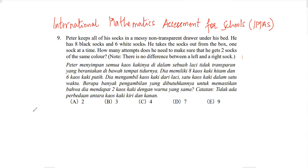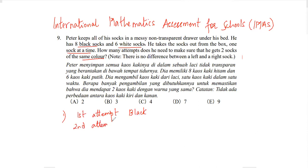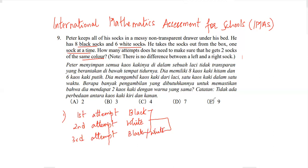Question 9: Peter keeps socks in a non-transparent drawer — 8 black socks and 6 white socks. He takes socks out one at a time. How many attempts does he need to guarantee two socks of the same color? In the worst case: first attempt gets black, second gets white — two different colors. On the third attempt he must get either black or white, guaranteeing a matching pair. So he needs a minimum of three attempts. My answer is option C.